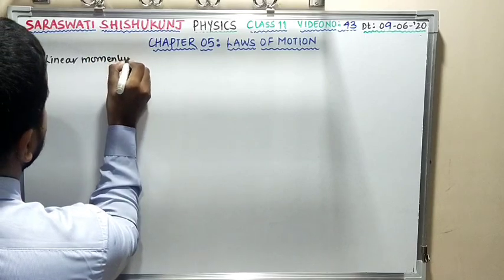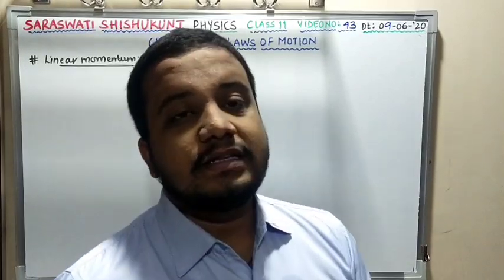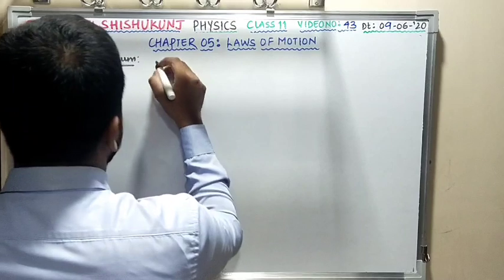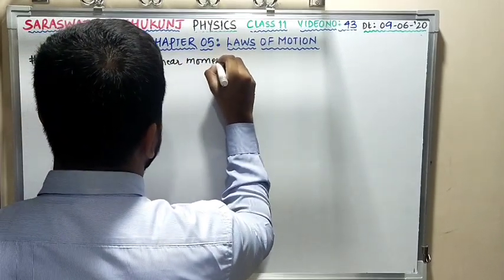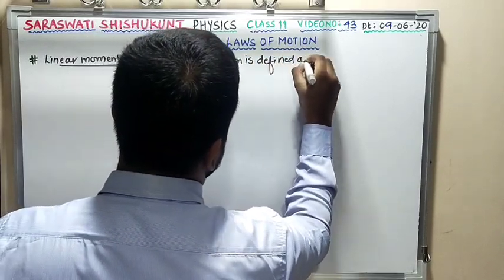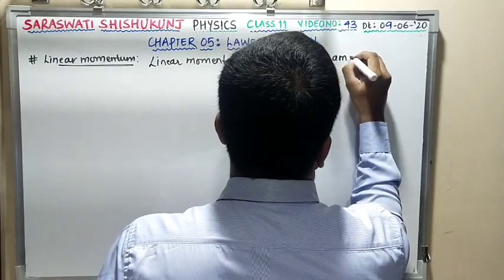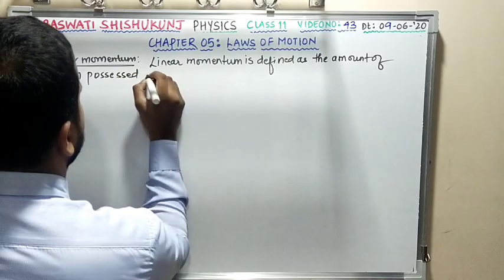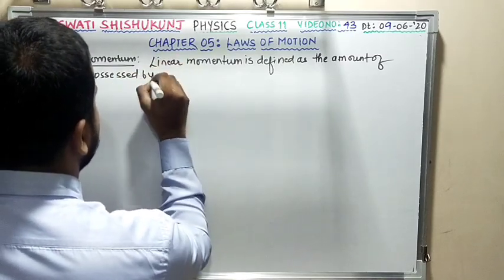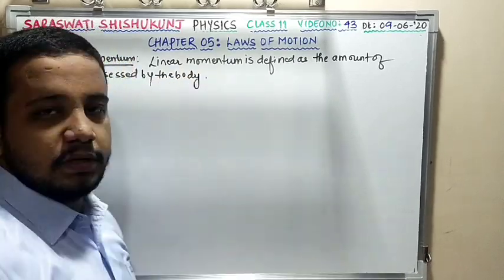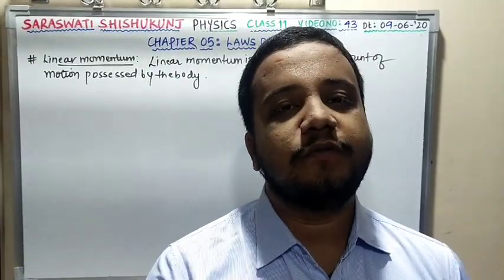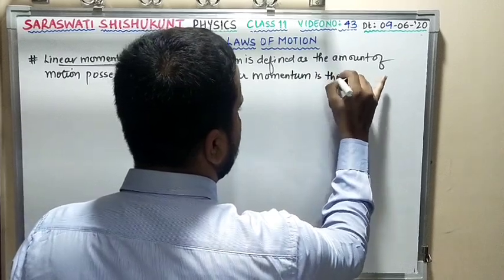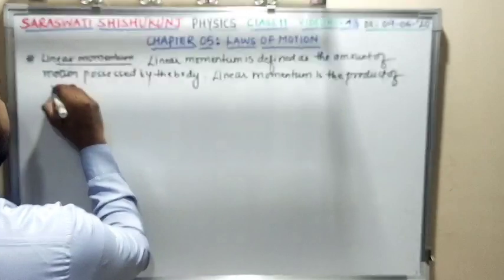We already know what linear momentum is. Linear momentum is nothing but the measure of motion possessed by the body. Linear momentum is defined as the amount of motion possessed or contained by the body. It can also be defined as the product of mass and velocity.